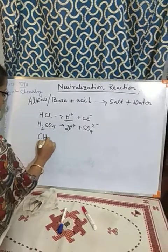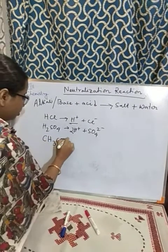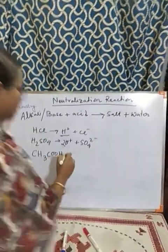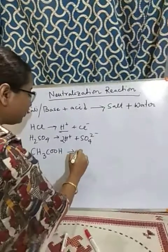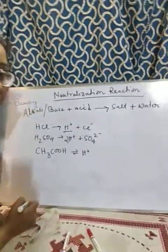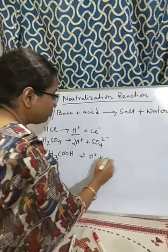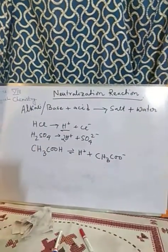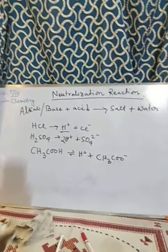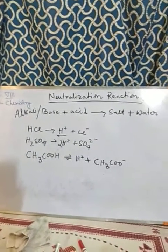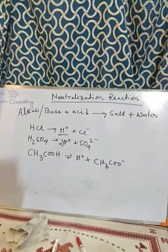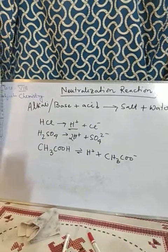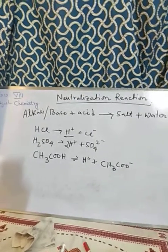Acetic acid (CH3COOH) is a weak acid, so from it only a very little amount of H+ hydrogen ion is produced, along with CH3COO− ion. So all acids break up into ions — all acids will produce hydrogen ion H+ along with the corresponding radical.